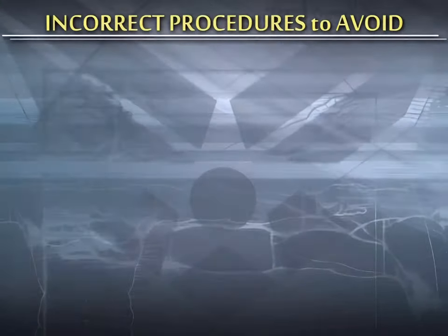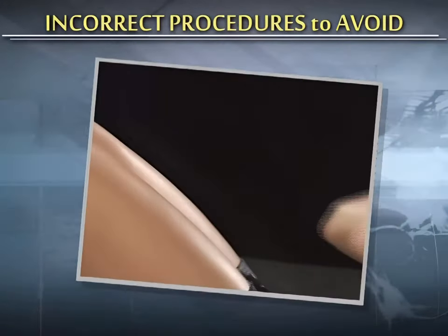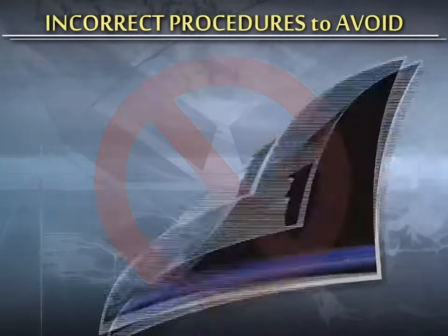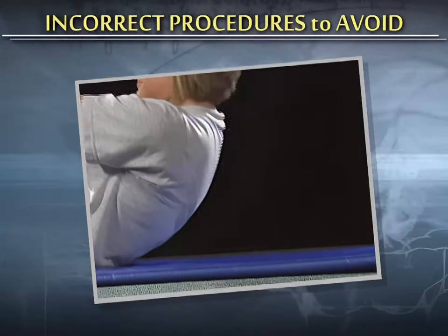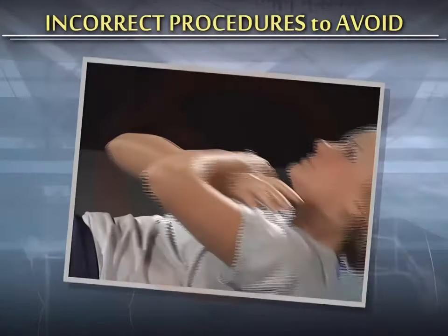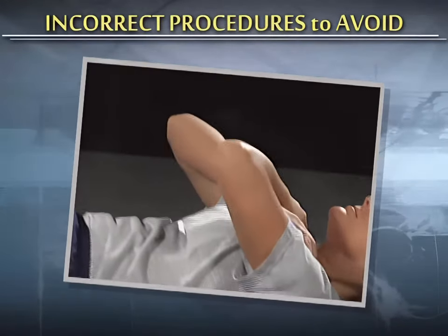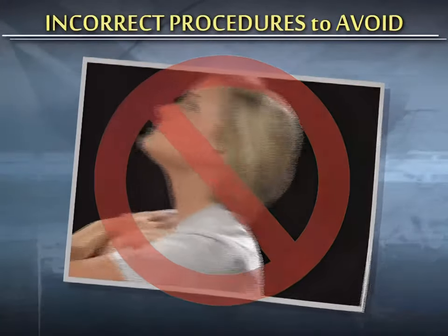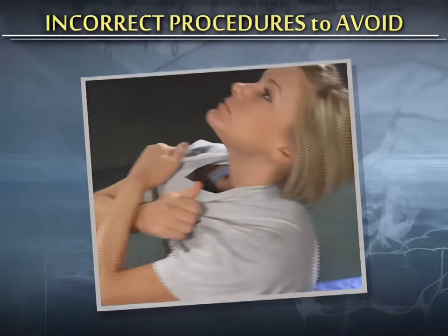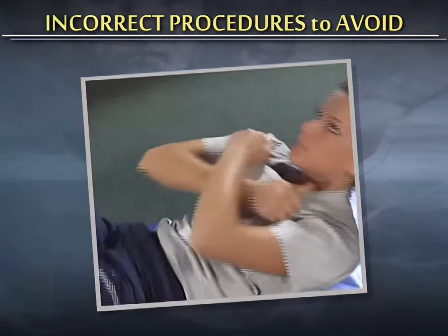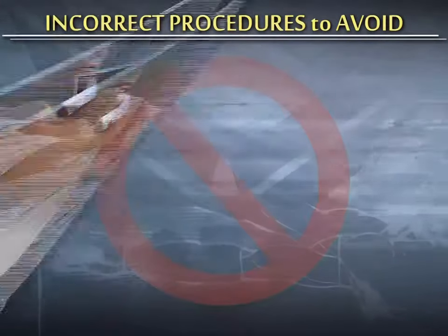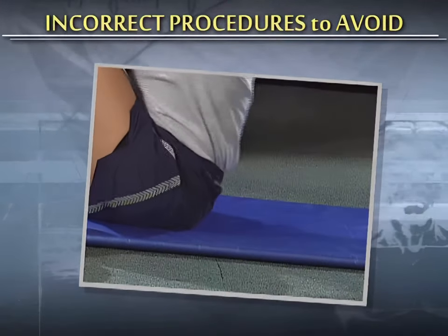Here are some incorrect procedures to avoid: elbows not touching your knees or thighs at the top of the sit-up; shoulder blades not contacting the floor or mat at the bottom of the sit-up; hands or fingers completely breaking contact with the shoulders or upper chest; grabbing onto your shirt, which does not assist in performing the sit-up and makes it difficult to determine if you are maintaining proper contact; and lifting your buttocks off the floor.